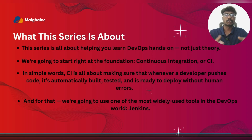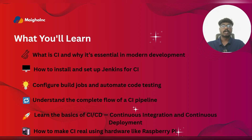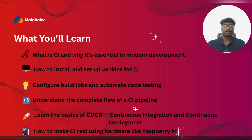Here's what you will learn in this series. First, we will understand what continuous integration is and why it's important in modern software development. Then we will install and set up Jenkins to manage the CI process. You will learn how to create build jobs and automate testing so your code is always checked before deployment. We will go through the complete flow of a CI pipeline from pushing code to running tests automatically. You will also learn the basics of CI/CD — continuous integration and continuous deployment. And finally, we will set all this up on a Raspberry Pi, bringing the CI system to life using real hardware.